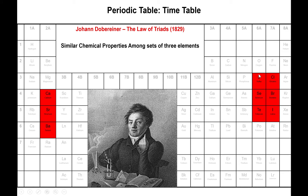The same happened with sulfur, selenium, and tellurium — they behave in a very similar manner to each other, and they happen to be in the same group. And chloride, bromide, and iodide were the other three elements that also behaved similarly to each other. So this was an early observation that there was some periodicity associated with certain groups of elements.